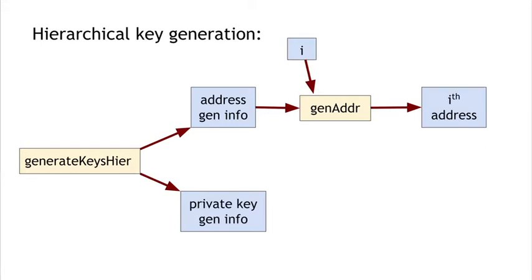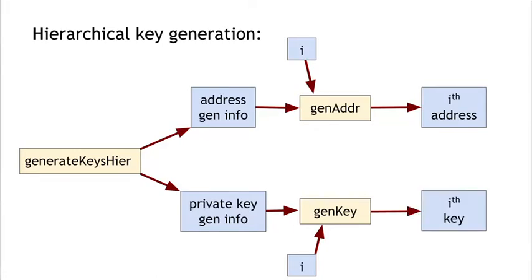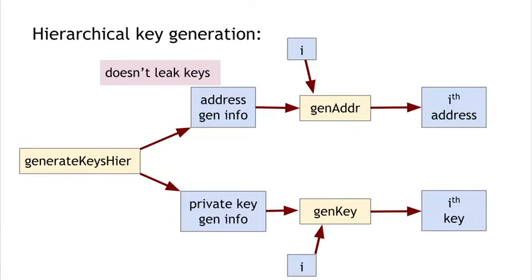Similarly, on the private key side, we can take the private key generation info and use it to generate the i-th key for any integer i. This is useful because of two important properties. First, the i-th address and the i-th key match up and correspond to each other just as if generated the old-fashioned way — a coin transferred to the i-th address is spendable by someone who knows the i-th key. Second, there is a security property: the address generation info doesn't leak keys, meaning it's safe to give the address generation info to anybody.